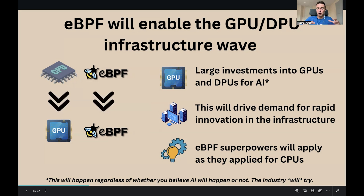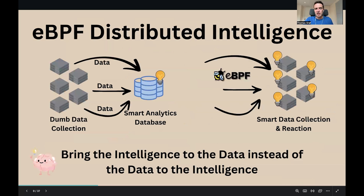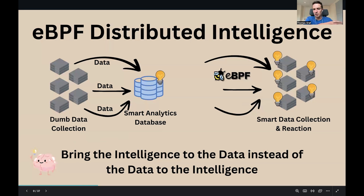Last but not least, what keeps me most excited is what I call eBPF distributed intelligence. Think about it this way: any sort of intelligent behavior, analytics, or machine learning use case — the typical architecture so far is relatively dumb data collectors that stream a lot of observability or telemetry to an analytics database, whether that's a SIEM, a time series database, or a graph database. A lot of data gets streamed, we keep a record of the history, and then we look at that data and make decisions. That's the dominant model so far, and it works, but it will eventually stop scaling due to massive data transfer and storage requirements.